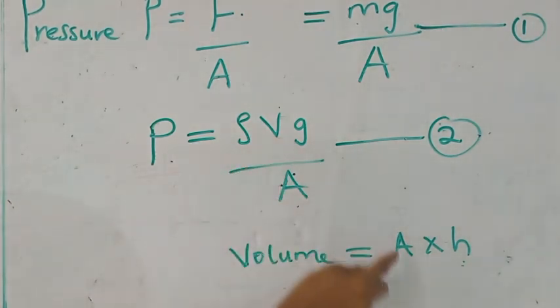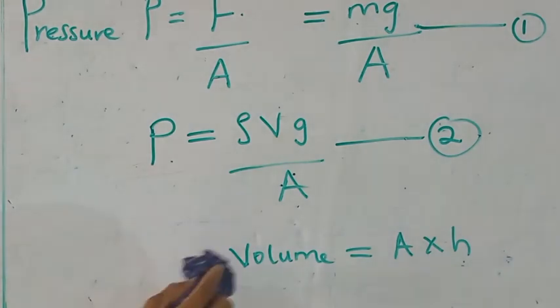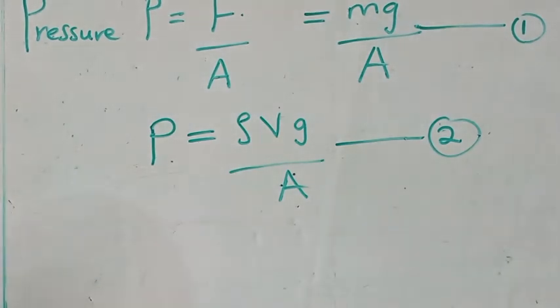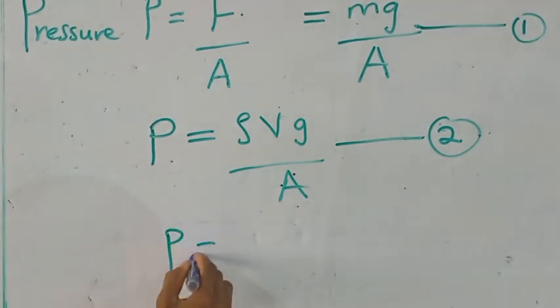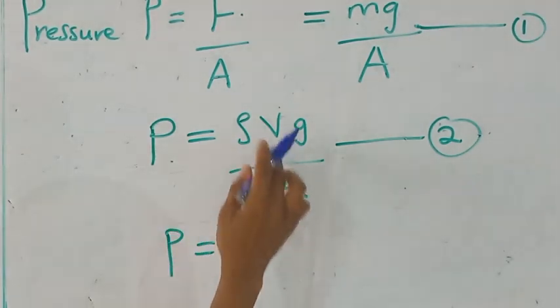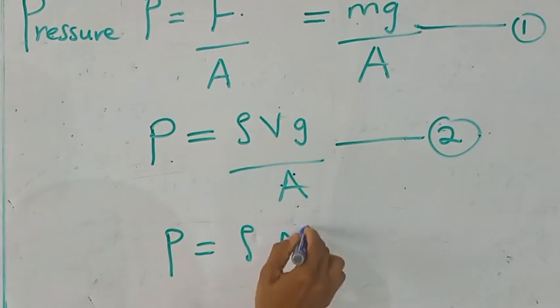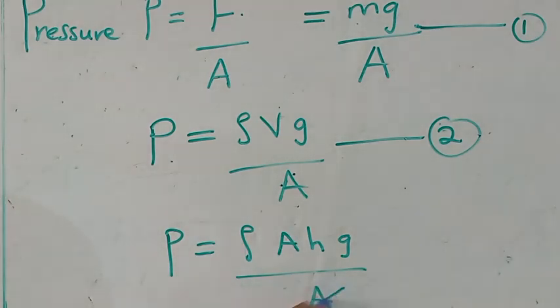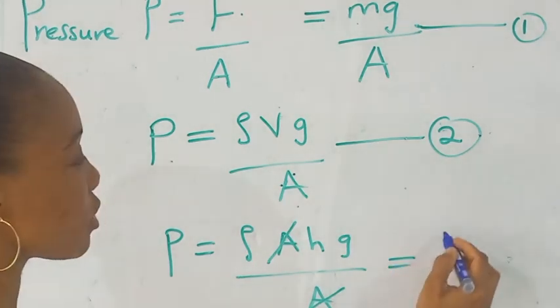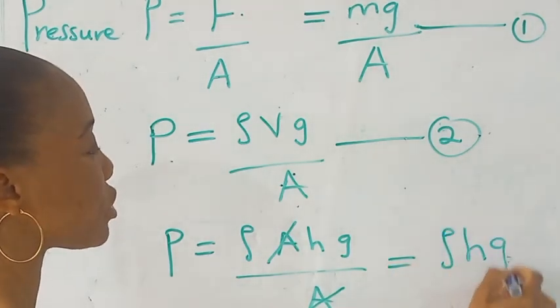So we are going to replace volume with A h. So that we are going to have pressure to be rho, instead of volume, we'll have A h g over A. Area will cancel area. Finally, we'll have pressure as rho h g.